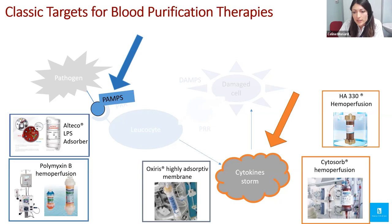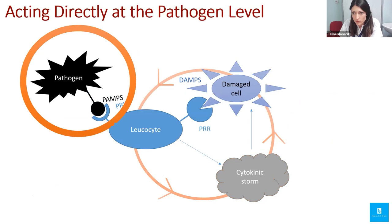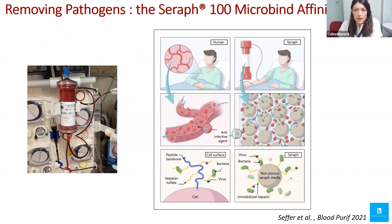Classic targets for blood purification are pathogen-associated molecular patterns such as endotoxins, and cytokines. Devices to remove these include hemoperfusion cartridges and enhanced hemofilters such as high-cutoff or highly absorptive hemofilters. However, none of these target the very first element of sepsis — the pathogen itself. This is the key point of the Seraph: it targets the pathogen, removing it from the blood to decrease bacterial load and act as a form of intravascular source control.